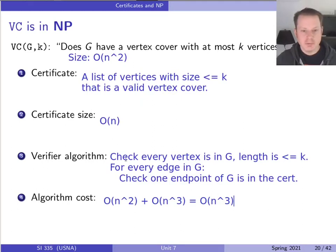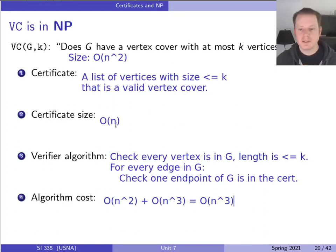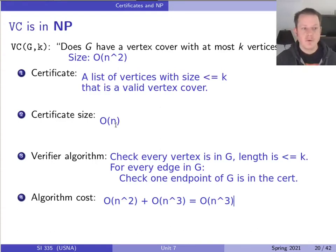So this proves that the vertex cover problem is a member of NP. A lot of these things are kind of obvious, but that doesn't mean there's not some specific things we need to write down. A lot of the challenge with NP proofs is figuring out where the obvious thing is, writing that down, and then focusing on the part that's a little bit more tricky.